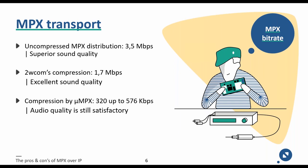Micro-MPX is the latest compression method developed by Stereotool, a member of the TELUS Alliance. They developed a compression method for MPX called micro-MPX, which allows transport over just 320 kilobits per second. Transporting MPX at this extremely low bandwidth is very impressive — even at 320 kilobits the audio quality is very satisfactory. How this is achieved will be explained later in this webinar.